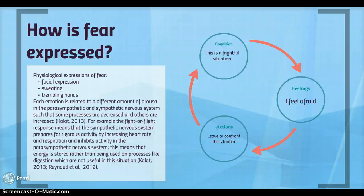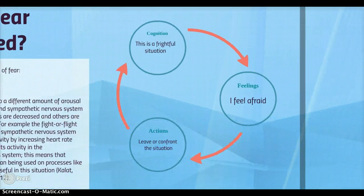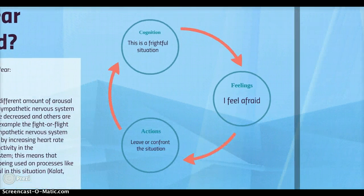For example, the fight-or-flight response means that the sympathetic nervous system prepares for rigorous activity by increasing the heart rate and respiration, and inhibits activity in the parasympathetic nervous system such as digestion, as this is not useful in this situation. The three components of fear include cognition — such as 'this is a frightful situation' — the feelings — 'I feel afraid' — and actions to leave or confront the situation.